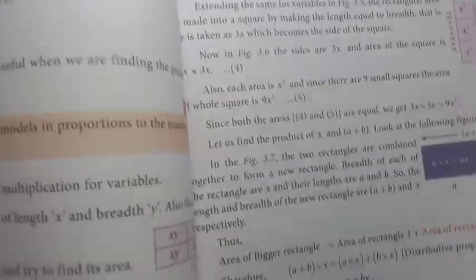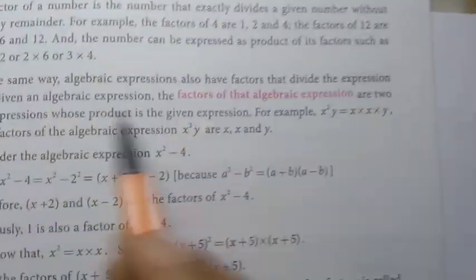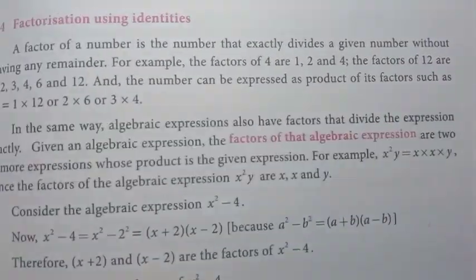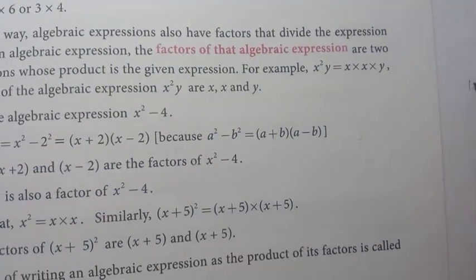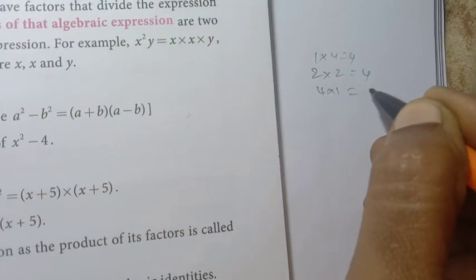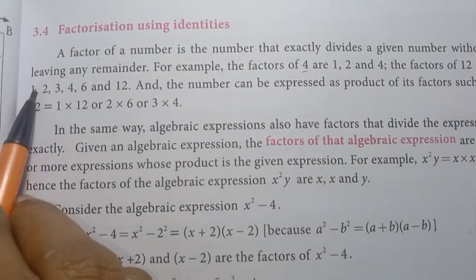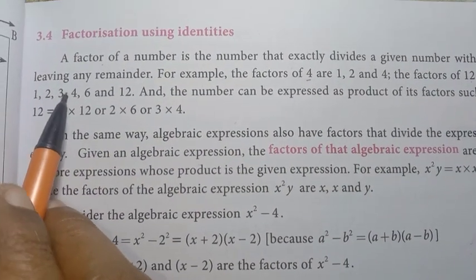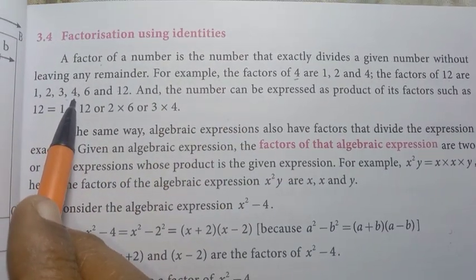Now let's look at factors. For the number 4, the factors are 1, 2, and 4. For the number 12, the factors are 1, 2, 3, 4, 6, and 12. We find them as: 1 into 12, 2 into 6, 3 into 4. So all factors of 12 are 1, 2, 3, 4, 6, and 12.